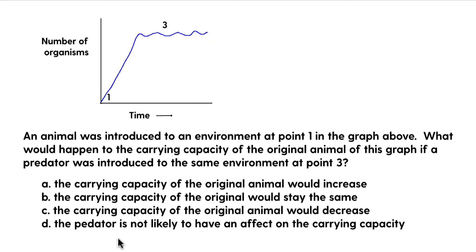And so what is likely to happen here is if a predator is introduced here, they will decrease the animal and their carrying capacity will be lower because the wolf or the mountain lion, they're going to eat the deer or the elk. And that's going to put negative pressure on the population of the elk or the original organism as it's called here. So the correct answer is C, the carrying capacity of the original animal would decrease.